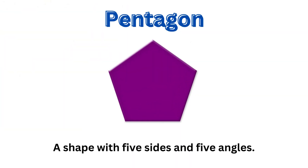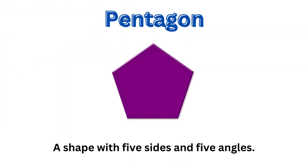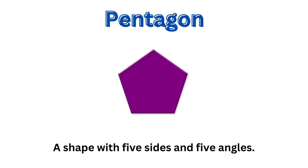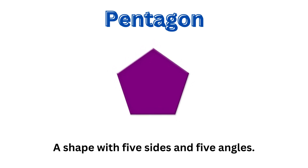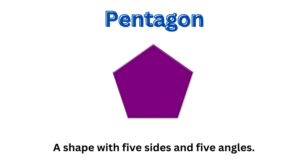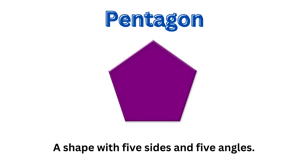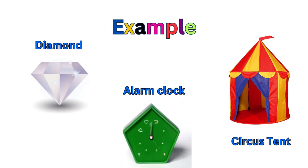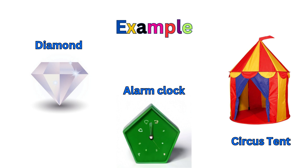This is a pentagon — a shape with 5 sides and 5 angles. Examples are a diamond, an alarm clock, and a circle stain.